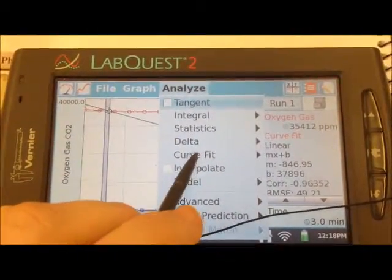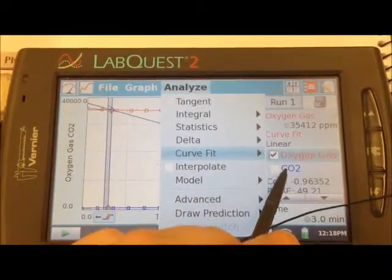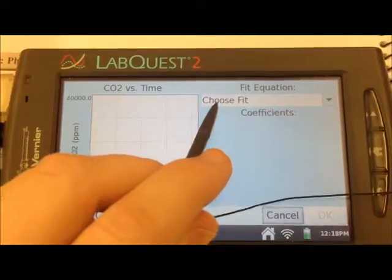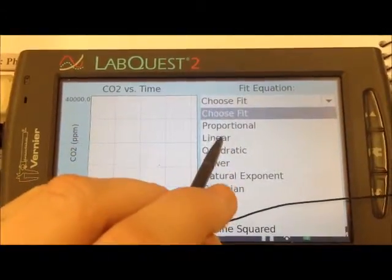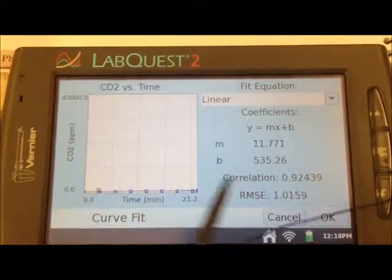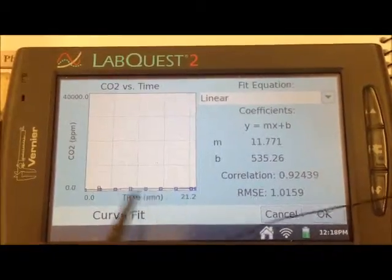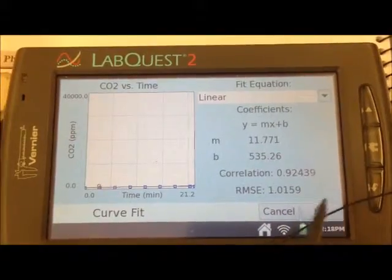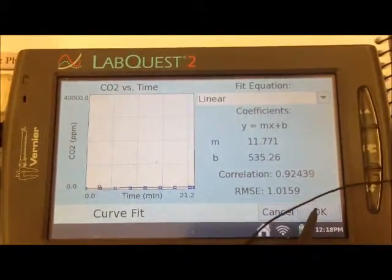And so we still need to find the blue, which is the curve fit of the CO2 gas. So here we go. We choose the fit again to linear, and here we have it, this blue line here. You've got the slope and the intercept, so you can write that down, and hit OK.